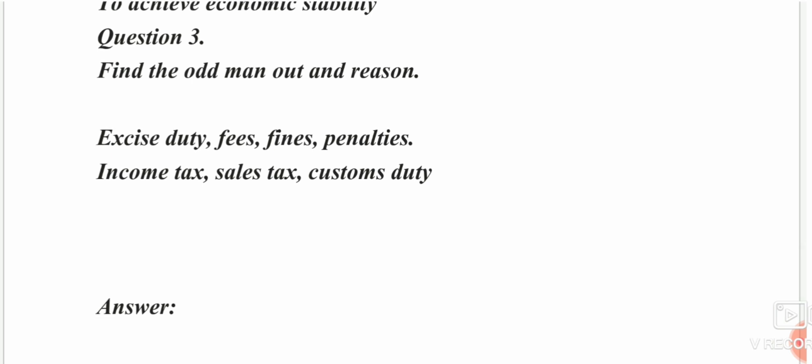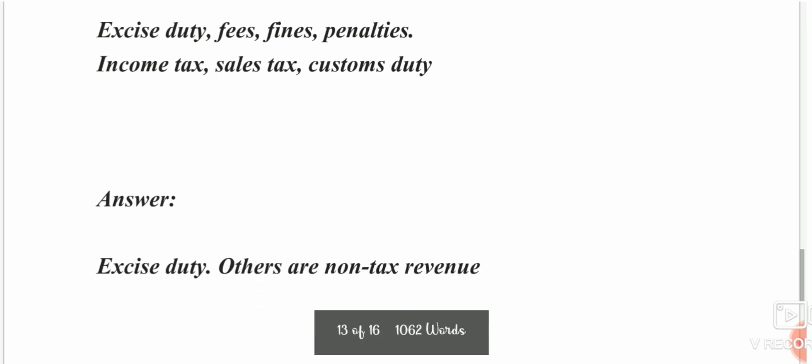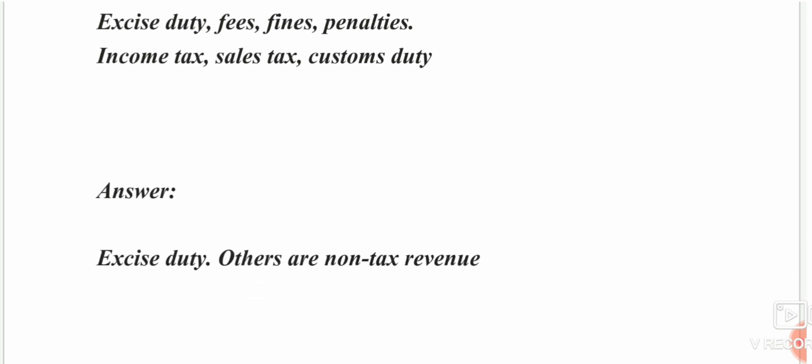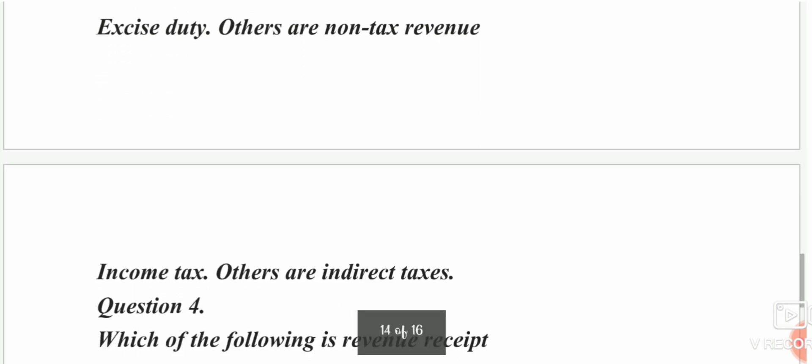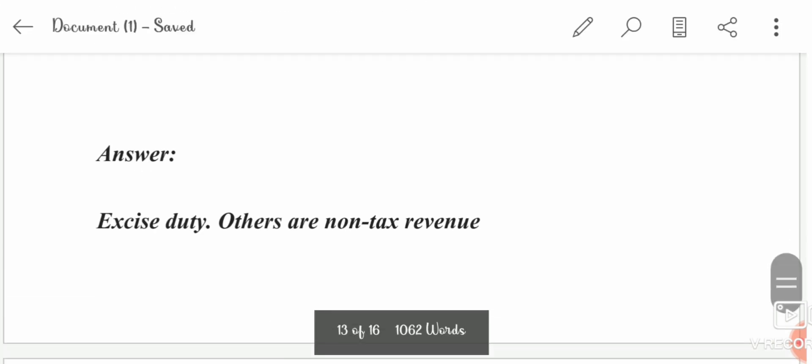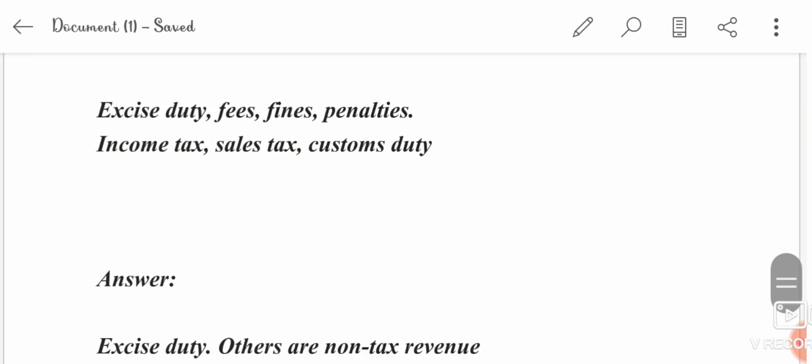Find the odd man out and give the reason. Options: excise duty, fees, fines, penalties. Excise duty is a tax while fees, fines, and penalties are non-tax revenues — so excise duty is the odd one out. Further: income tax, sales tax, and customs duty are all taxes.